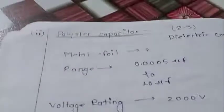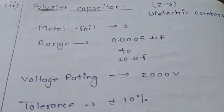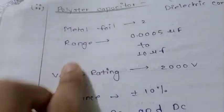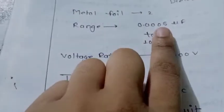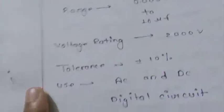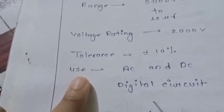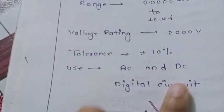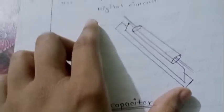Polyester capacitor uses dielectric constant of 2 to 3. Metal foils are used. Its range and voltage rating are similar to paper capacitor. It is used in AC and DC applications. The figure is shown here.